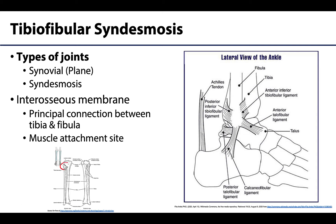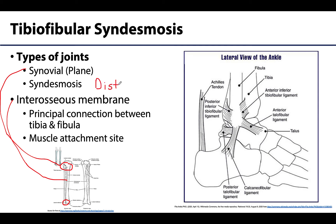You'll have a superior tibiofibular joint, which is actually an example of a synovial plane joint. You will have the interosseous membrane between the bodies and shafts of the tibia and fibula. And then the distal-most articulation will be an example of a syndesmosis — the tibiofibular syndesmosis. We classify the interosseous membrane as a type of syndesmosis as well, so two of the three joints are fibrous rather than synovial. Only the superior tibiofibular joint is synovial.